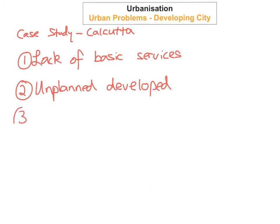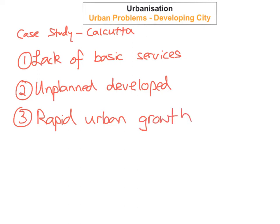The third problem in Calcutta is rapid urban growth. Calcutta is one of the fastest growing cities, and its population has doubled in the last 20 years. At present there are over 17 million people living in Calcutta. This has led to very high birth rates and a lot of problems we've already talked about, such as the lack of basic services, education, healthcare, and housing. There's even a lack of jobs because the population has increased so much.